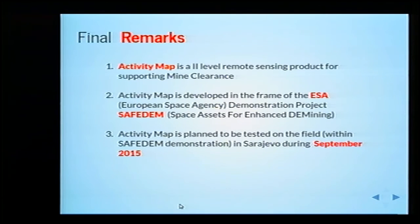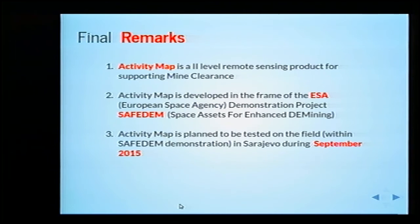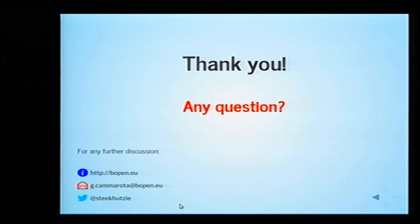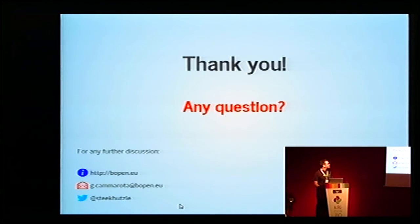Just to conclude: the activity map is a second-level product designed to support mine clearance professionals by reducing the time and money invested in the process and reducing the danger of the job. This activity map was developed within the European Space Agency project called Space Assets for Enhancing Mine Clearance, and this project is going to be tested in the real field next September in Sarajevo. Thank you very much — any questions?